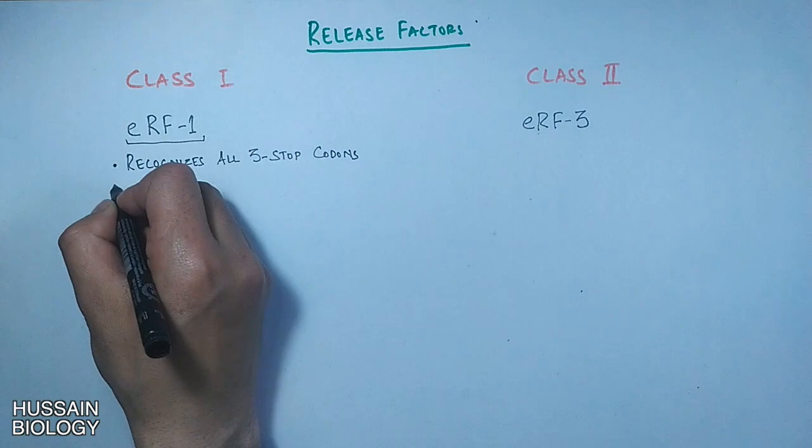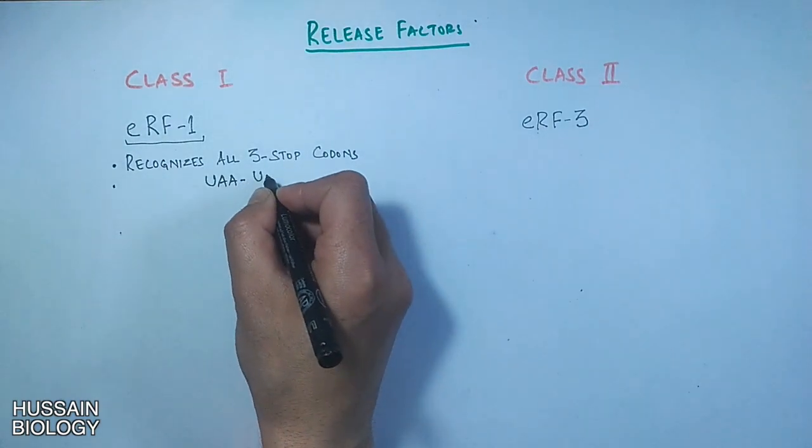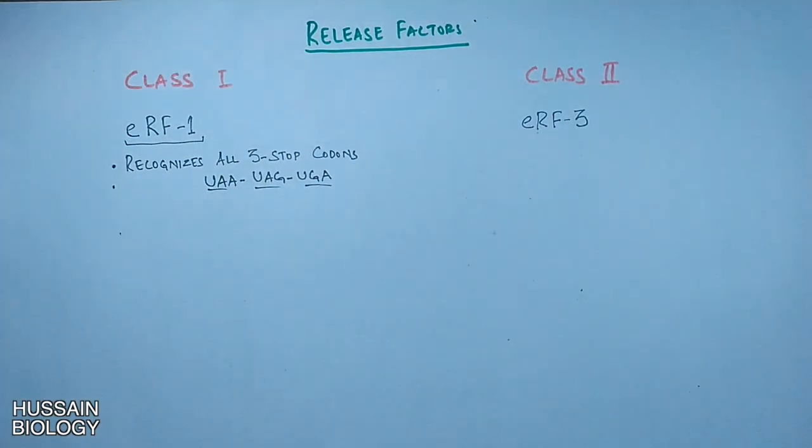From class 1, ERF1 recognizes all three stop codons: UAA, UAG, and UGA. From class 2 factors, ERF3 helps in binding the GTP molecule with ERF1 factor, but still the specific role of ERF3 molecule is unknown.